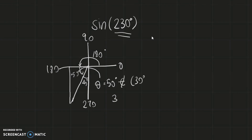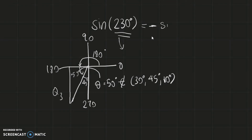However, 50 degrees is not a special angle — it is not 30, 45, or 60 degrees — which means we don't have a memorized ratio for it. In this case we must use a calculator. Since this is in quadrant 3 where only tangent is positive, the answer will be negative. You can either enter sin 230° directly or enter negative sin 50° — both give the same answer.